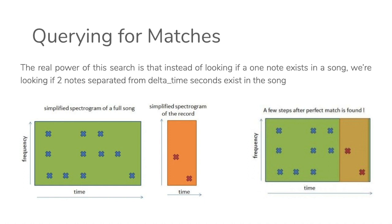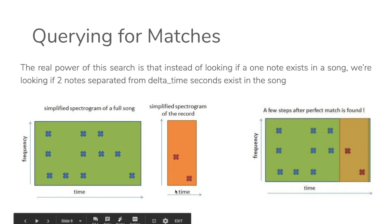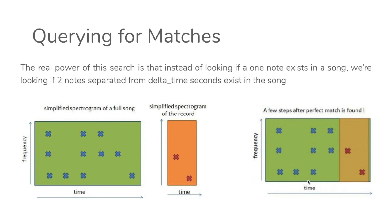The third part is querying for matches. The real power of this search is that instead of looking for a single note in a song, it looks for two notes separated by delta time seconds existing in a song. You can see in the center image the query being given to Shazam, and on the left figure the actual database — after finding matches, it confirms which song is being matched. This is how Shazam works. Thank you.